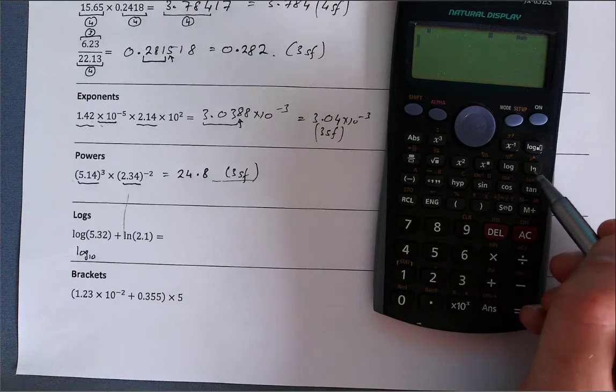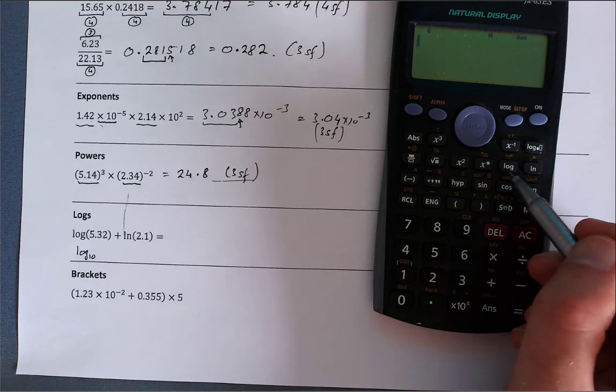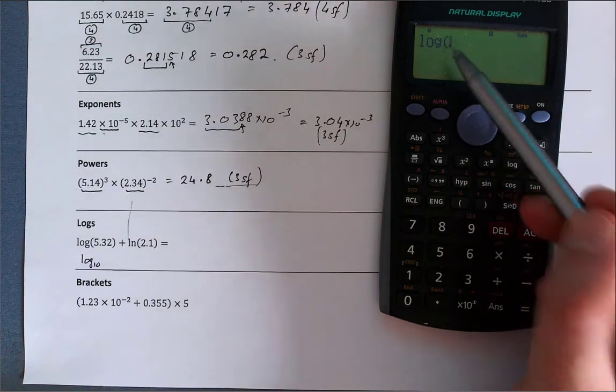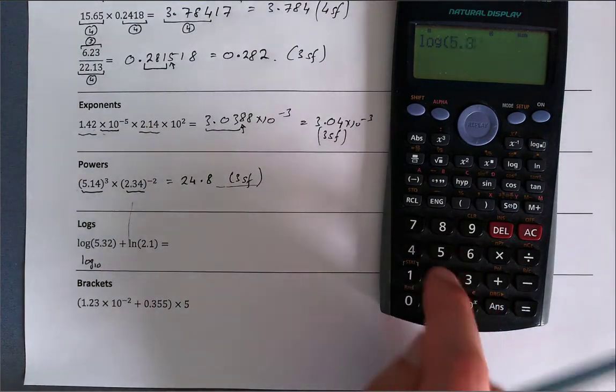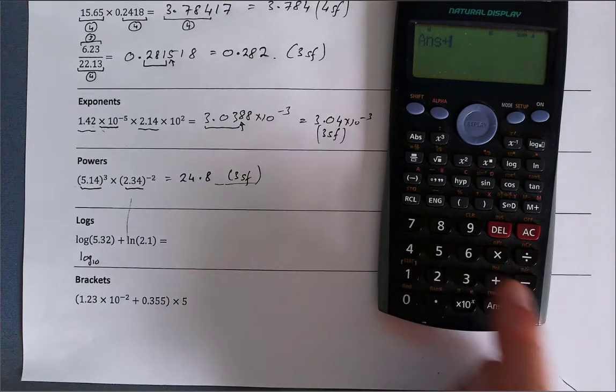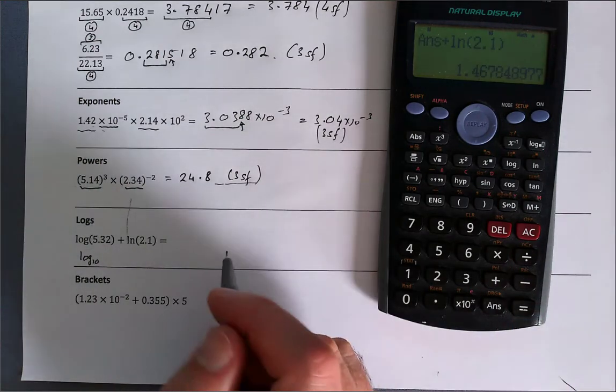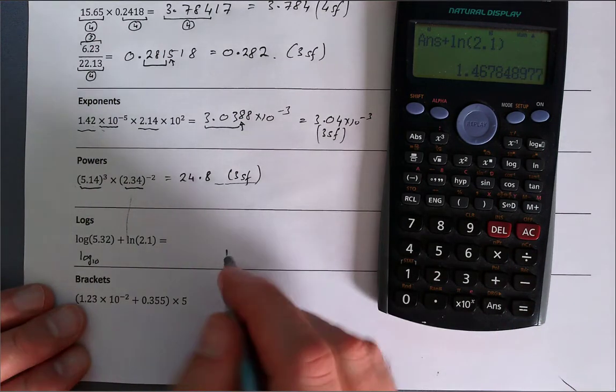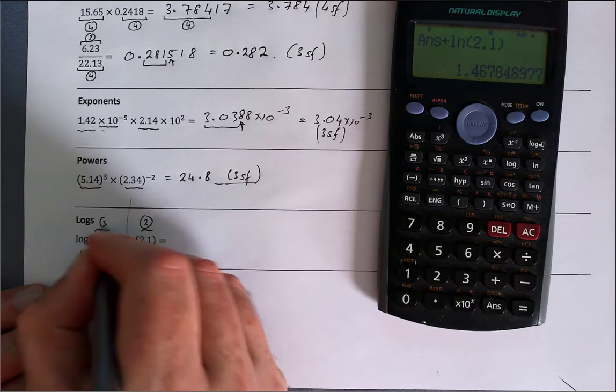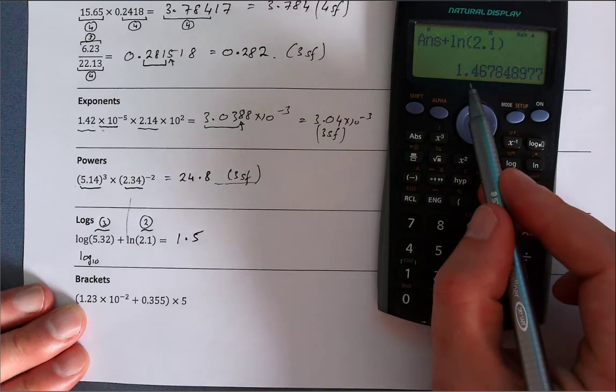So sometimes you'll see ln, but most times the logs you come across would be log. So I can say log, pressing the log button, and you see it enters in log and opens a bracket: 5.32, close the bracket, just log the first number, plus ln, ln second number 2.1, close the bracket. If you don't close the bracket, it's actually clever enough to do it itself, but it's good to be neat. Here I'm limited to two significant figures, so my answer is going to be 1.5. 1.467 to two significant figures, I round up to six, and that gives me 1.5.